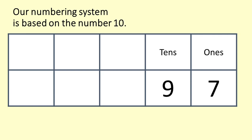Similarly, when we get to 99 we have no more digits so we put a 1 in the hundreds column to tell us that we have 100 and we put two zeros to make sure we know that the 1 is in the hundreds place.